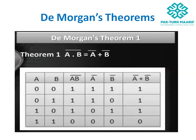Now De Morgan's theorem — there are two theorems proposed by De Morgan. Theorem one states: (A AND B) complement is equal to A complement OR B complement. In other words, (A·B)' is always equal to A' + B'. We can substitute variables; for example, with X and Y: (X·Y)' = X' + Y'.